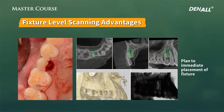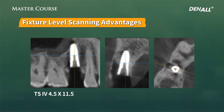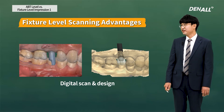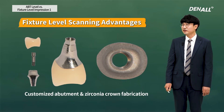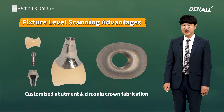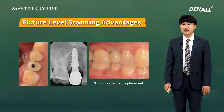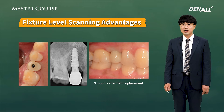Let's look at a case. On the upper second premolar there was a fracture, so we planned for immediate placement. After immediate fixture placement, we took a CT. After three months, we digitally scanned, and the abutment and crown were designed simultaneously. As the custom one-piece abutment was being created, the zirconia crown was fabricated at the lab simultaneously. Through digital scanning, the final prosthesis looked like this — contact and occlusion appear to be all good.